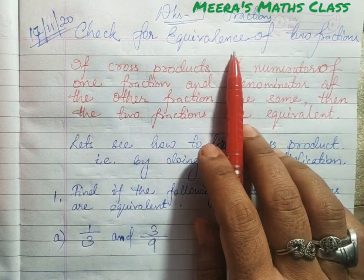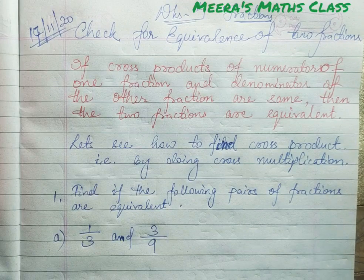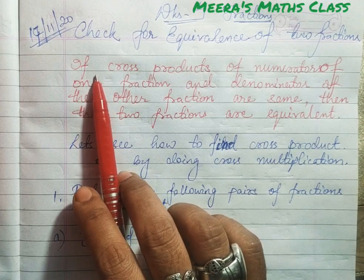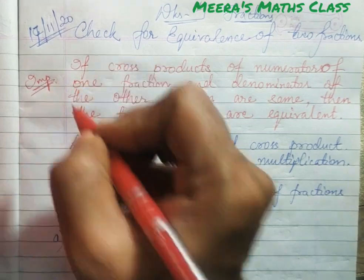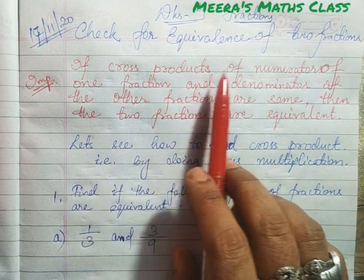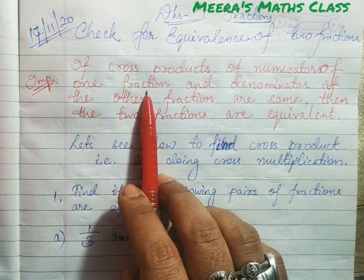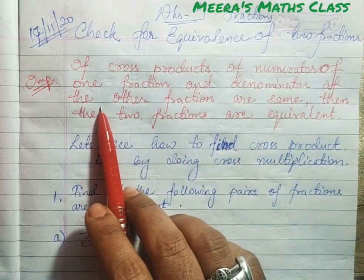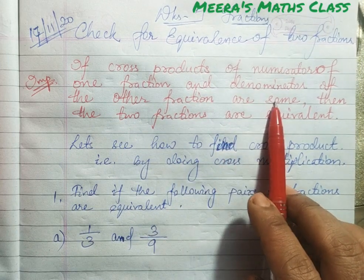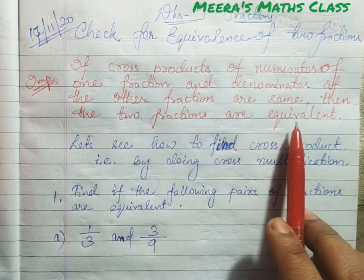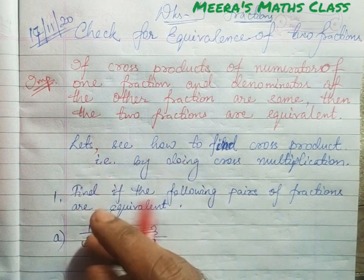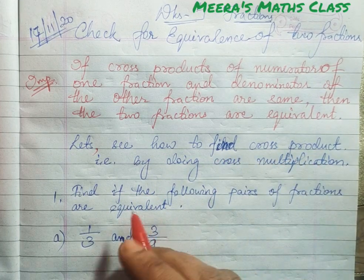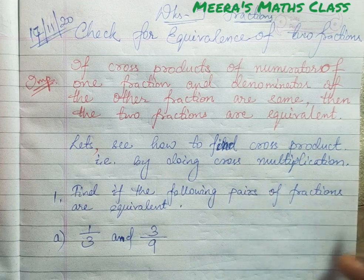Check for equivalence of two fractions — that means whether two fractions are equivalent or not. We have to remember this, it is very important: if the cross products of the numerator of one fraction and the denominator of the other fraction are the same, then the two fractions are equivalent. Now let's see how to find the cross product by doing cross multiplication.